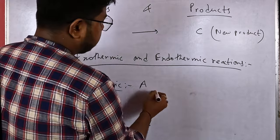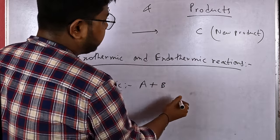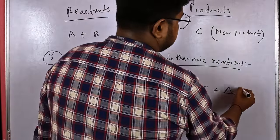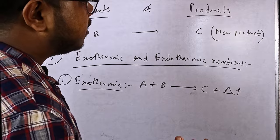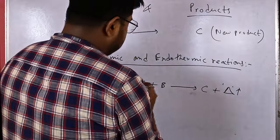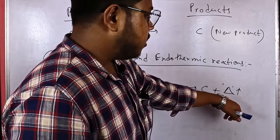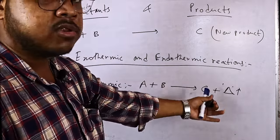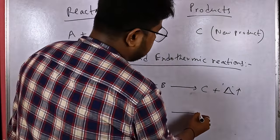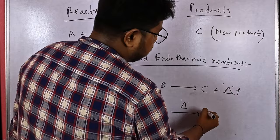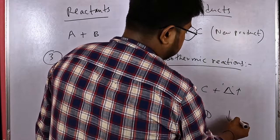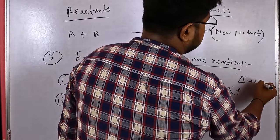In exothermic reactions, two reactants A and B react and produce a product C while increasing the total energy of the system. We denote the total temperature of the system by a triangular signature (delta). In exothermic reactions, the total energy of the system is increased, while in endothermic reactions the total energy of the system is decreased.